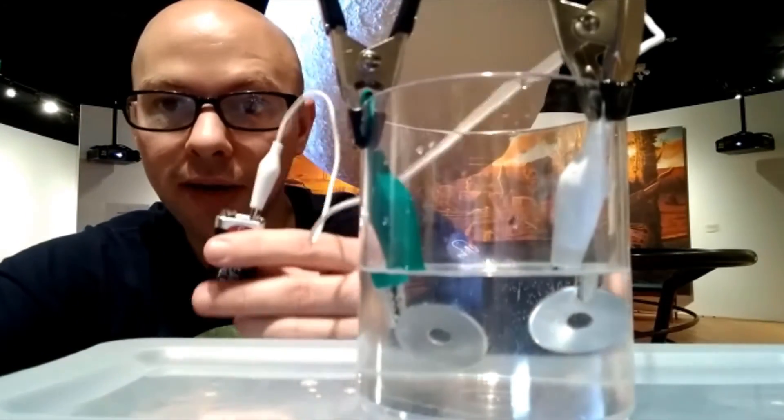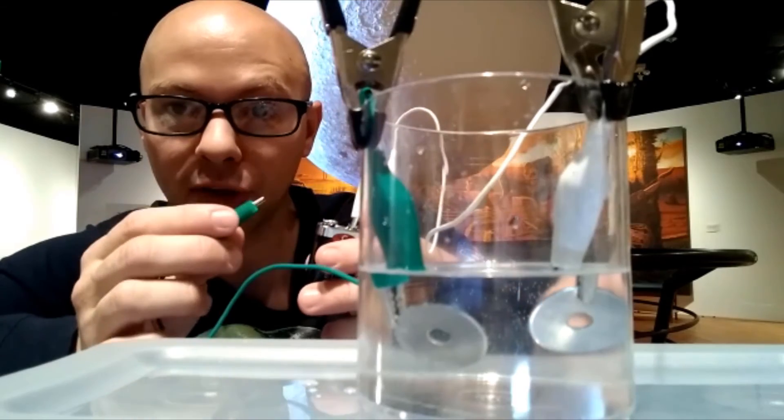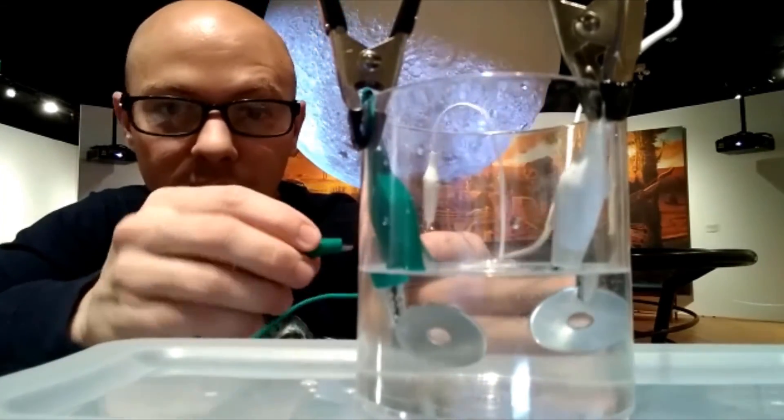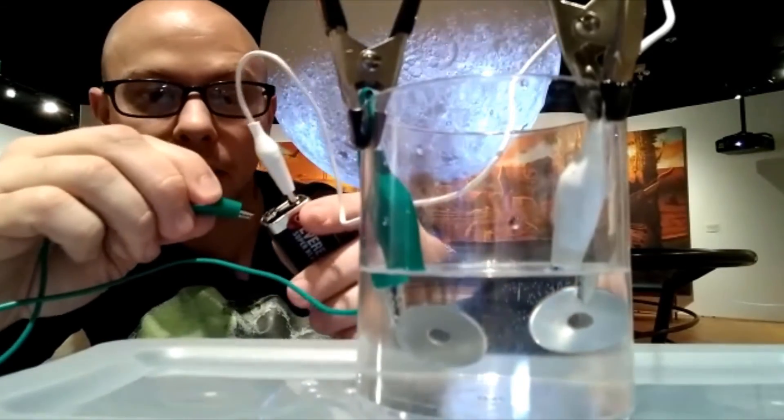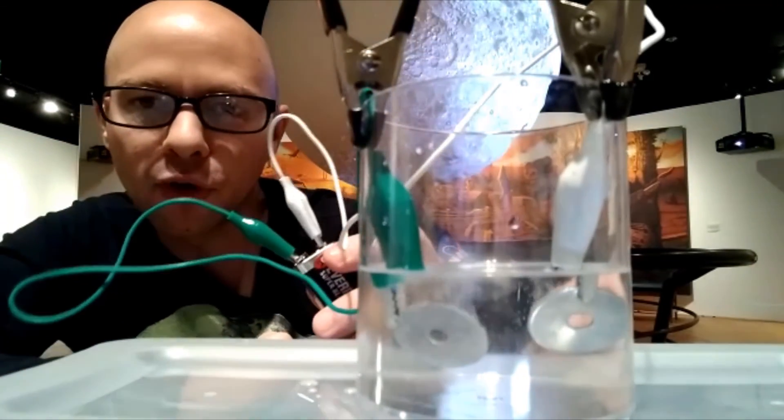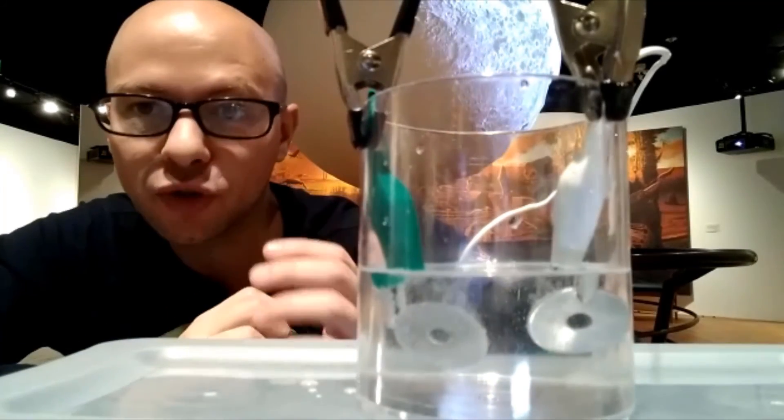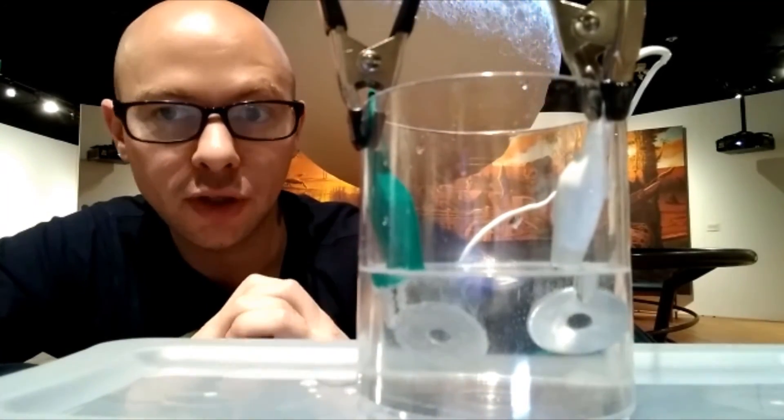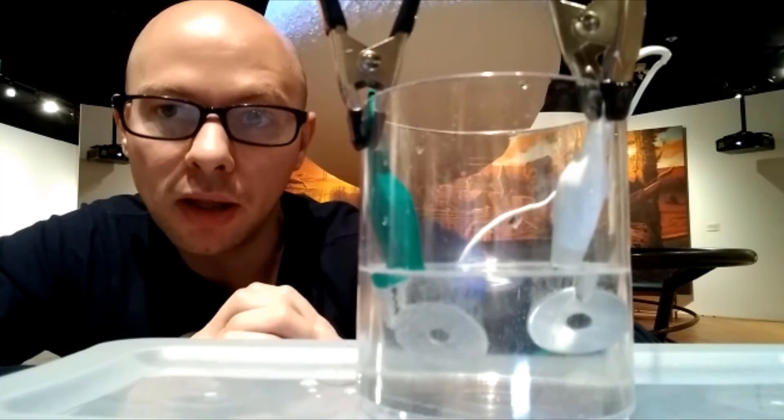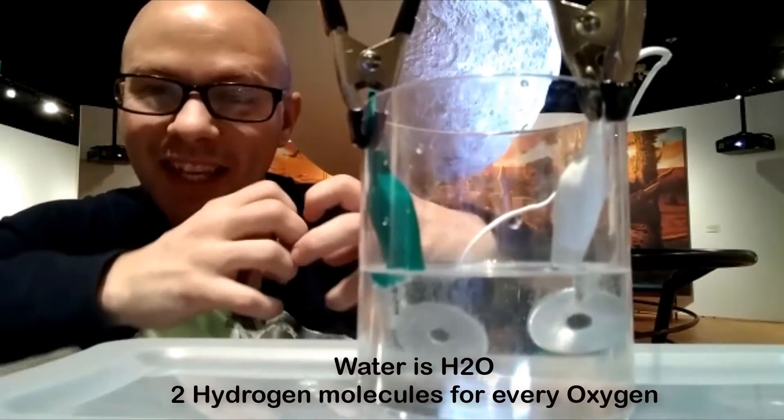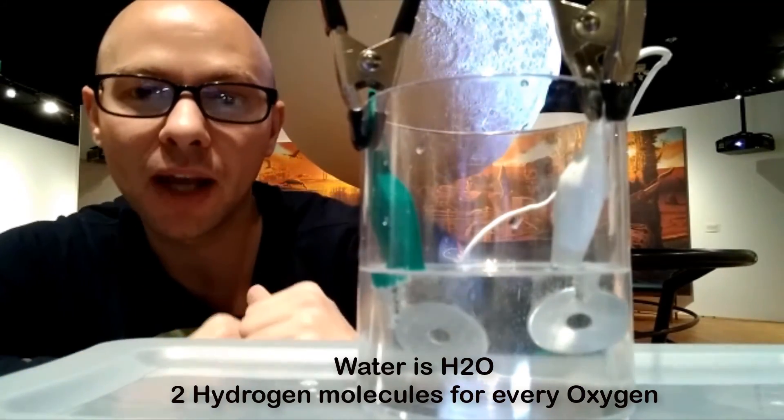And I've connected one of the wires to the battery and I just need to connect the other wire to the battery. Now watch the washers very closely because the moment I connect the battery, bubbles begin to form on the washers. What's happening here? Well, we're performing electrolysis. This is a chemical process where we use electricity to separate molecules into the atoms that they're made up of. And the electricity is actually separating the hydrogen from the oxygen.